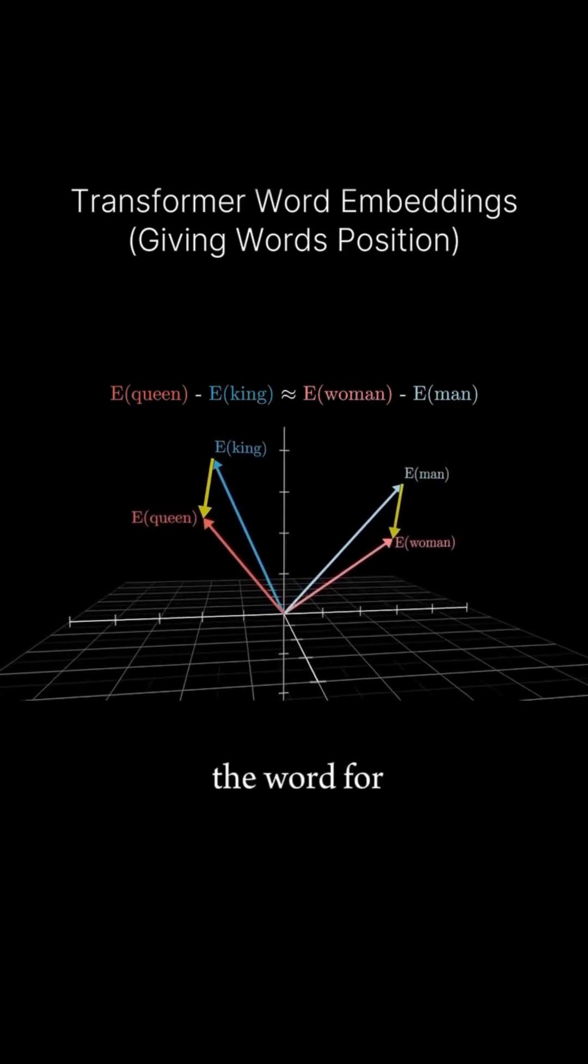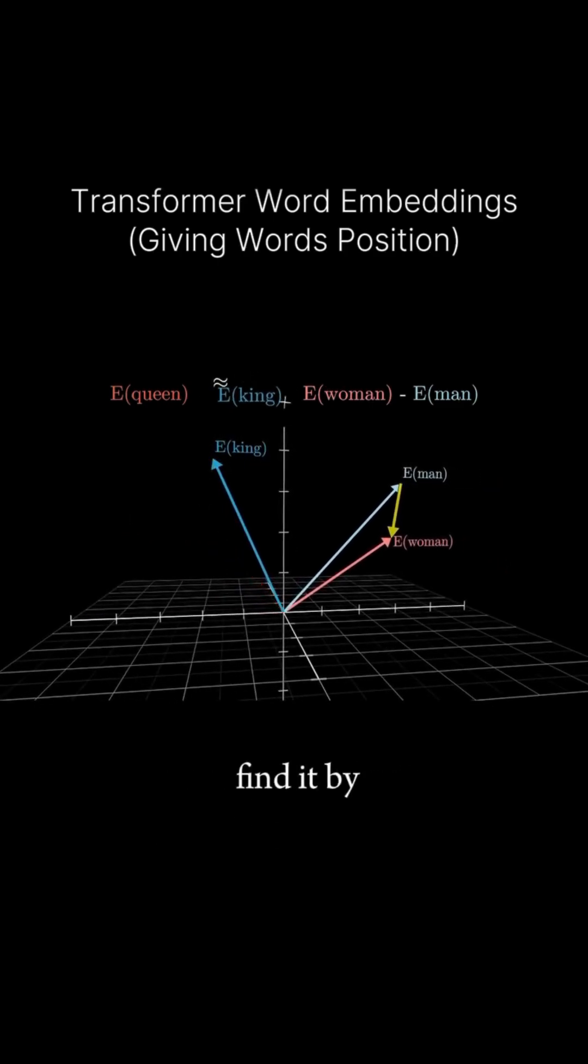So let's say you didn't know the word for a female monarch, you could find it by taking king, adding this woman minus man direction, and searching for the embeddings closest to that point.